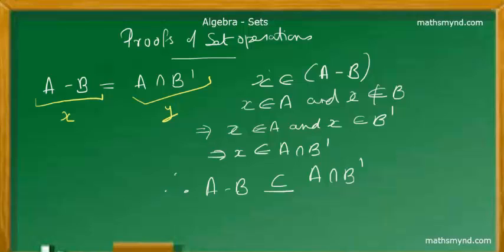Now let X be an arbitrary element of the set found by A minus B. Now what is the meaning of A minus B? Set A minus set B means those elements which are present in A but not present in B. So that simply means that X is an element of A and X is not an element of B.